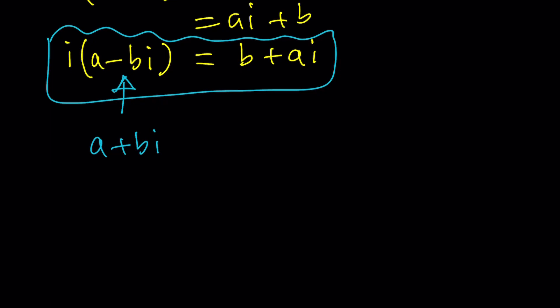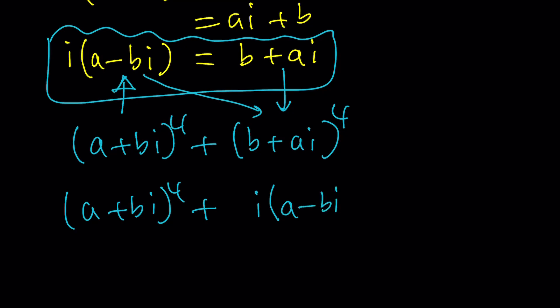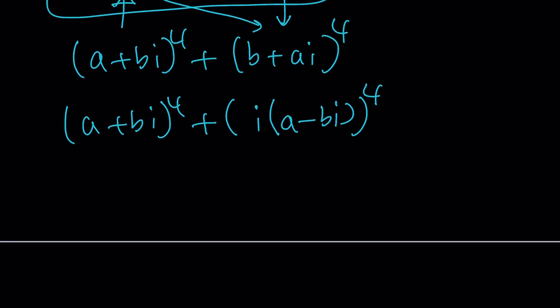(a+bi)⁴ + (b+ai)⁴. We're going to explore whether this is real. Now we're going to replace this one with that. So (a+bi)⁴ + (b+ai) will be replaced with i times (a-bi) to the fourth power. Make sense? So I did the substitution.